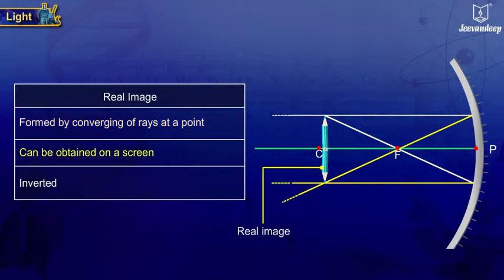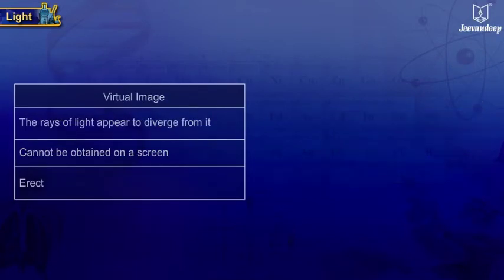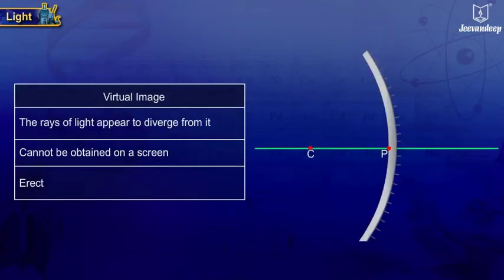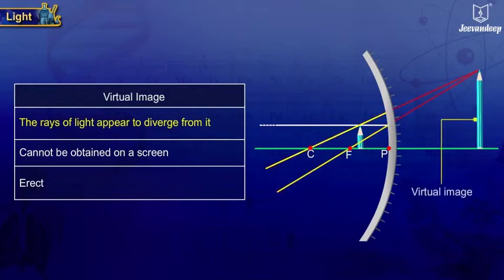A real image is inverted. A virtual image is one from which the reflected or refracted rays of light appear to diverge. It cannot be obtained on a screen.